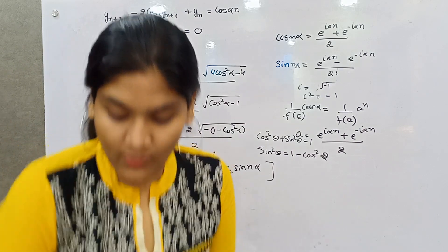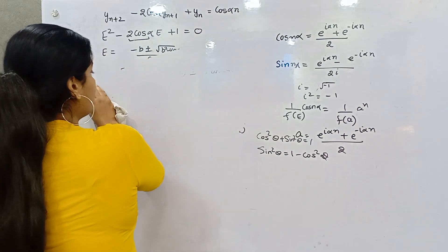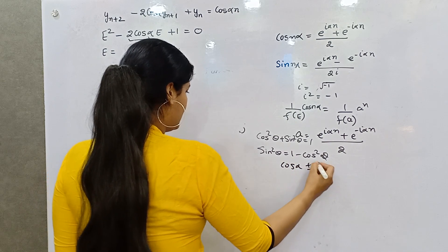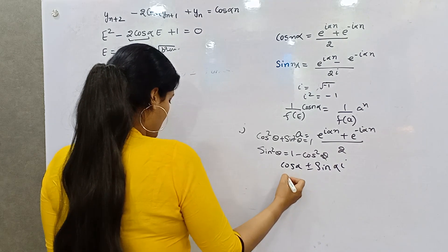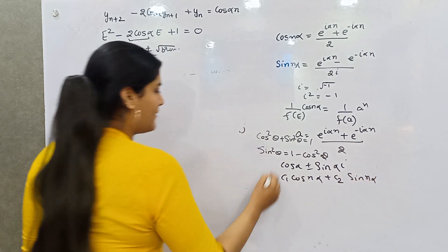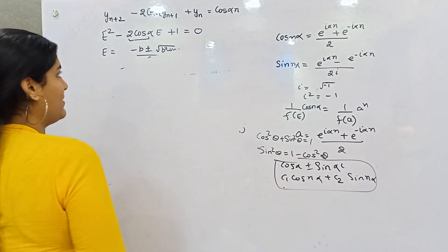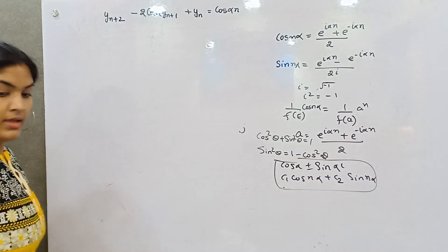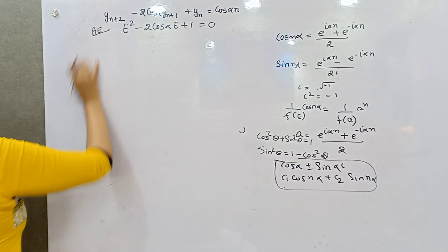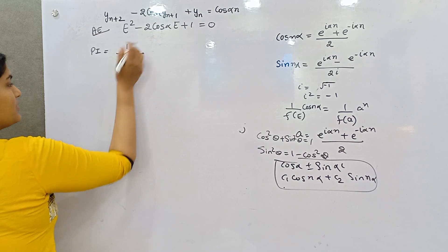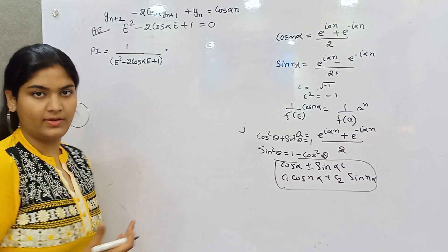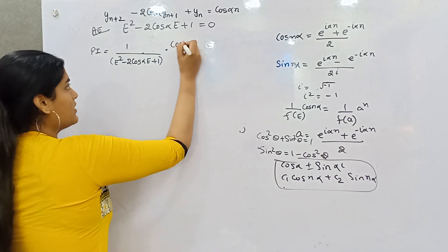Now the more complex part: calculating the particular integral. Your roots were cosα ± i·sinα and the complementary factor was C1·cos(nα) + C2·sin(nα). For the particular integral, the formula is 1/f(E) times the right-hand side, where we have the trigonometric function cos(nα).